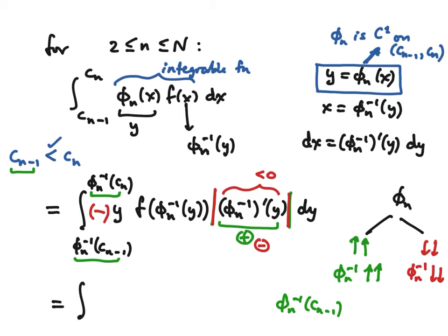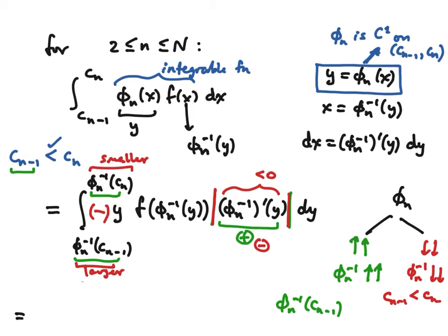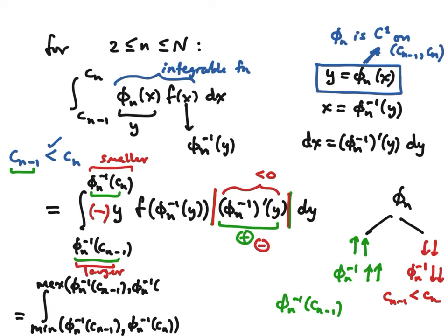With all that said, we can write the integral by taking the minimum of the two values as the lower limit and the maximum as the upper limit of integration. Then we'll have f of φ_n inverse of y, and then the absolute value of φ_n inverse prime of y, dy. If we sum over all those values of n, that takes care of everything except the two ends, where we might have improper integrals.